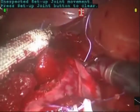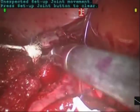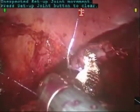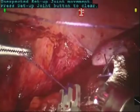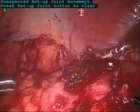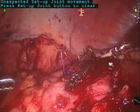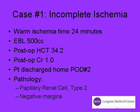Next, a surgicel bolster is placed and the defect is compressed using 3-0 vicryl sutures. Warm ischemia time was 24 minutes. Estimated blood loss was 500 cc.